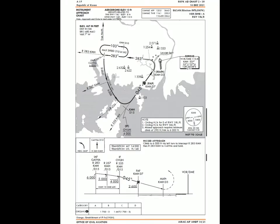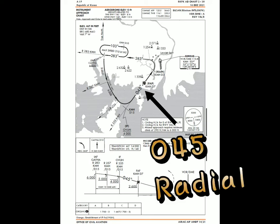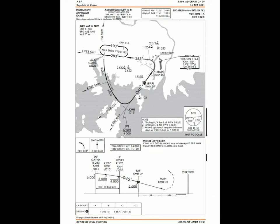Maintaining approach course 045 degrees on the VOR DME Alpha approach is the same. However, from the turning of the downwind leg, the tracks are very different.